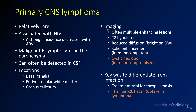When you see CNS lymphoma, the key characteristics are that you'll often have multiple enhancing lesions — in this case there's really just one. They will often be T2 hypointense, and you'll have reduced diffusion. In immunocompetent patients, the enhancement tends to be pretty solid and homogeneous, but in immunocompromised patients it will be more cystic and necrotic, as it was in this case.